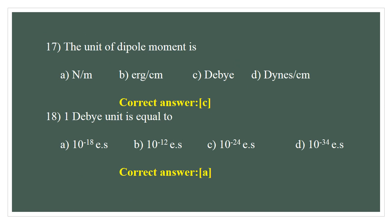Question number 17. The unit for dipole moment: A) Newton per meter — wrong, B) X per centimeter — wrong, C) Debye unit — correct, D) Dynes per centimeter — wrong. The correct answer is C — Debye unit.